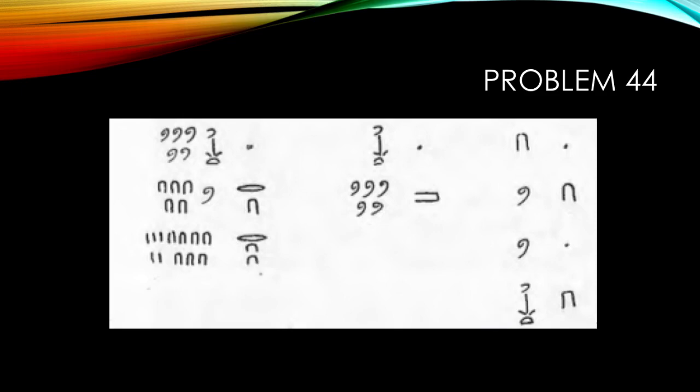This sign here means half. So we multiply a thousand by a half. It gives you 500. We sum the two and it gives us one thousand and five hundred.